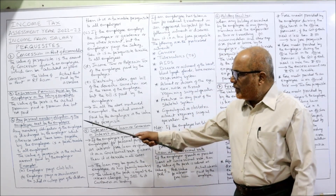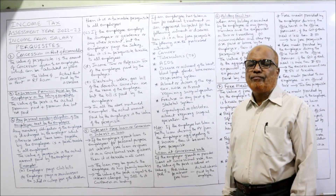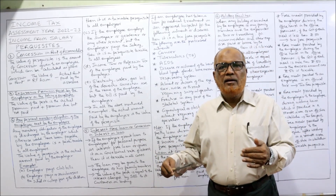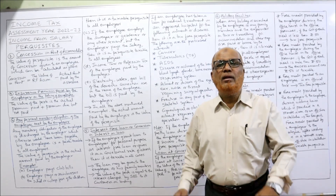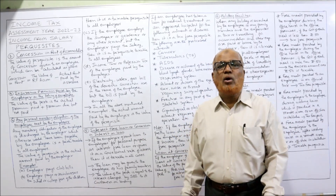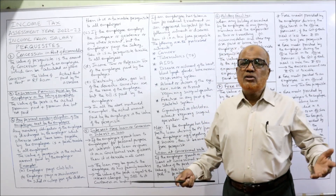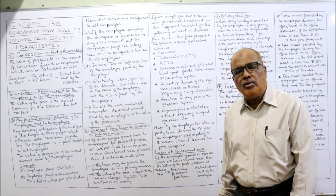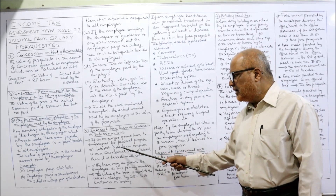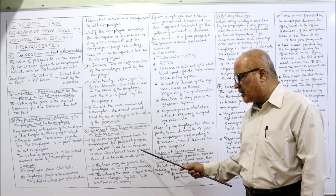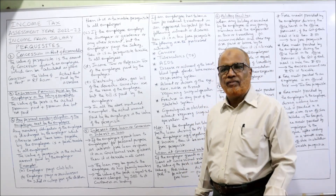The fifth point is regarding interest-free loans or concession in interest. If an employee takes a loan from the employer that is either interest-free or at a concessional interest rate, the employee is getting a benefit by not paying full interest. That is also a taxable perquisite under the Income Tax Act. The loan may be given either to the employee or their family members.